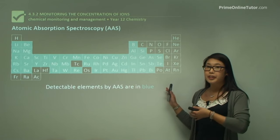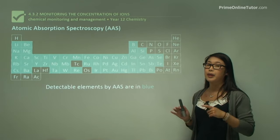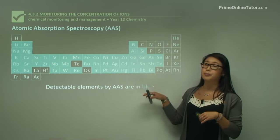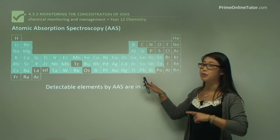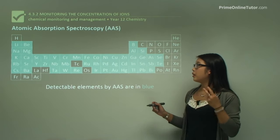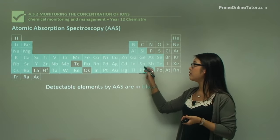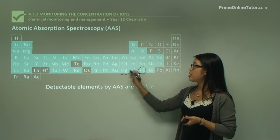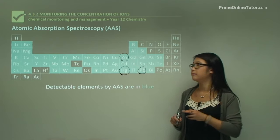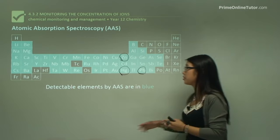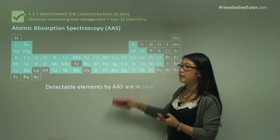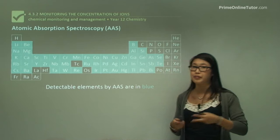In a periodic table, we can only look at metal ions using AAS, and we've highlighted those in blue. We'll be focusing on lead, mercury, and zinc in this lesson. These are important because lead and mercury are toxic in the human body, but zinc is really essential for living.